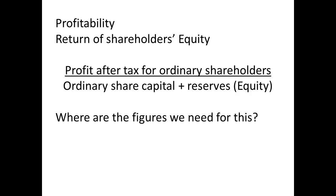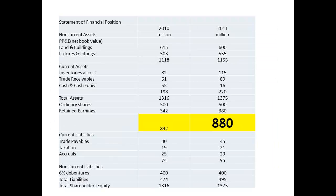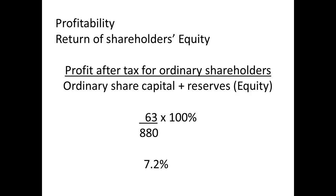We will start with the first ratio relating to profitability: the return on shareholders' equity. This ratio is given by dividing the profit after tax for ordinary shareholders by the ordinary share capital and reserves, which is usually the equity. We find the net profit on the income statement — here the net profit for the year is £63 million. Our total for ordinary shares and reserves from the balance sheet is £880 million. We substitute these figures into our equation: 63 divided by 880, then multiply by 100. We have an answer of 7.2% for a return on shareholders' equity.